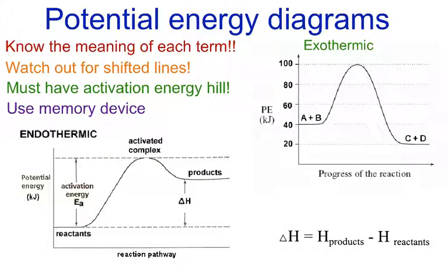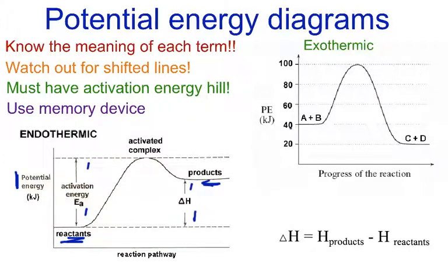In terms of potential energy diagrams, all they're doing for you is comparing what happens in terms of potential energy in relation to the reactants and the products. Now, in terms of the reactants and products and representation, they can be represented by particular lines or they can be represented by actual numbers. We'll look at it in a second.